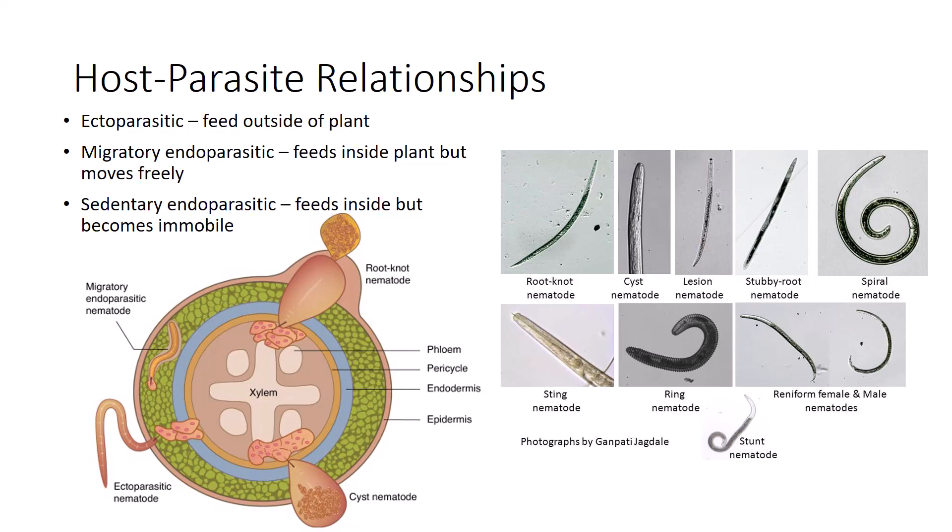Ectoparasitic nematodes, which never enter roots, may be recovered only from soil samples. Endoparasitic nematodes are often detected most easily in samples of the tissues in which they feed and live — burrowing and lesion nematodes — but some occur more commonly as migratory stages in the soil, such as root knot and reniform nematodes. Endoparasitic nematodes inside root tissues may be protected from pesticides that do not penetrate into roots, and root tissues may also shield them from many microorganisms that attack nematodes in the soil. Ectoparasites are more exposed to pesticides and natural control agents in the soil.